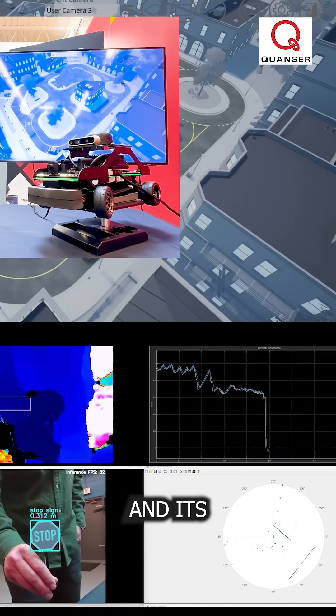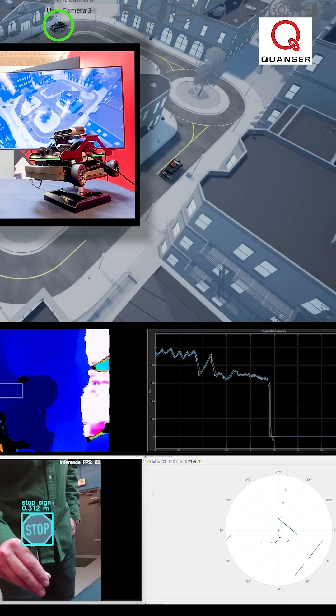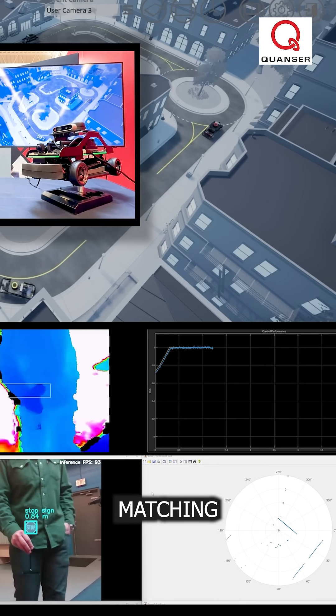Watch Q-Car 2 and its digital twin, the green virtual car, roll in perfect sync. Both exchange their status in real time, matching perfectly.